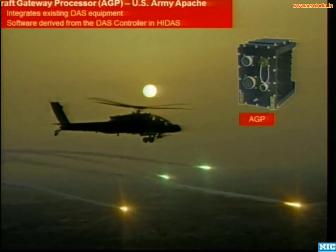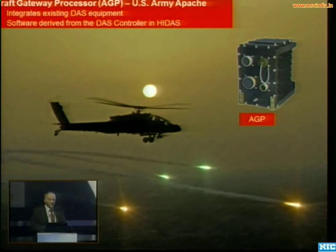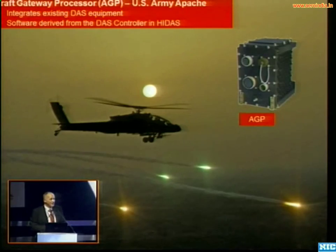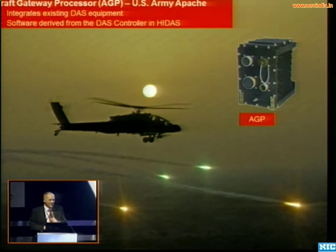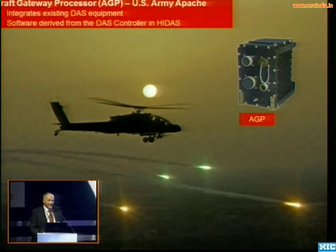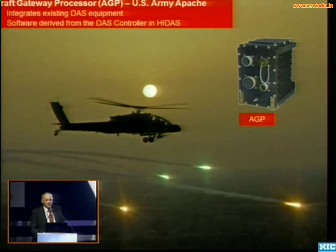Boeing were so happy with this that they asked us to take out the software element and put it in a small processing box, which is now on every new build and remanufactured Apache. It's called the AGP - the Aircraft Gateway Processor - which is actually just a small ruggedized PC with a lot of interfaces. That lives in the middle of the Apache, connected to all the radar warner, missile warner, and so on pieces, all of which are made by different manufacturers.